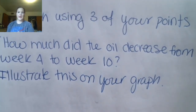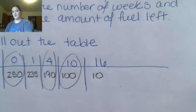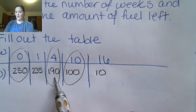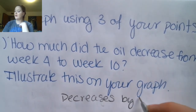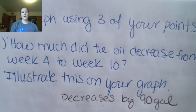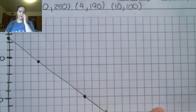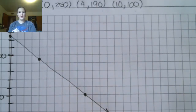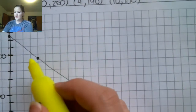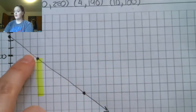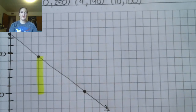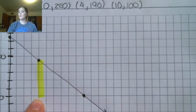For part D: how much did the oil decrease from week four to week ten? We can answer this with our table — from week four to week ten it goes from 190 to 100, so it decreases by 90 gallons. Then it says illustrate that on your graph. The amount of fuel oil is the y-axis, so we're illustrating the change from this point to this one in terms of y. You can see the decrease in y from this point to this point.